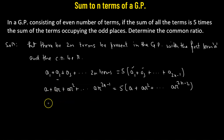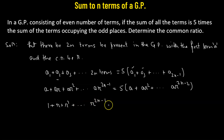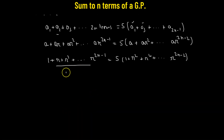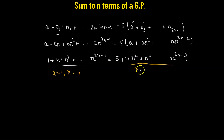We can take 'a' as the common factor and cancel it from both sides. This gives us: 1 plus r plus r² all the way up to r^(2n−1), equals 5 times 1 plus r² plus r⁴ all the way up to r^(2n−2). The left side is a GP with first term 1 and common ratio r, and the right side is a GP with first term 1 and common ratio r².